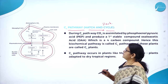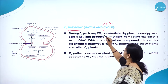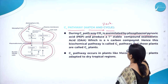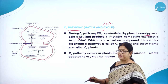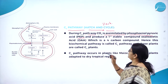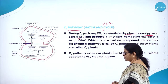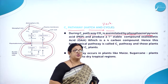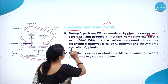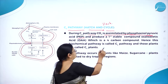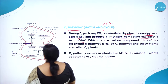Now let us understand what is this C4 pathway. During C4 pathway, carbon dioxide is assimilated by phosphoenol pyruvic acid, that is PEP, and produces a first stable compound. So what is the first stable compound produced? Oxaloacetic acid.